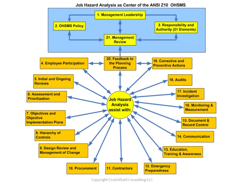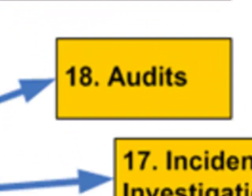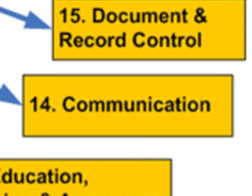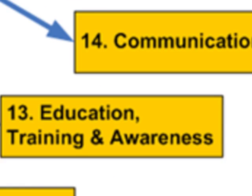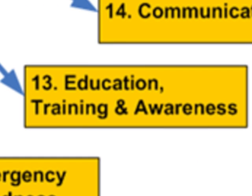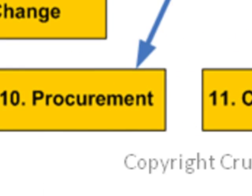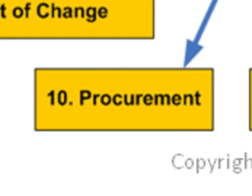A good job hazard analysis process aids in improving audits. It can aid in improving communications about the safety program, the risk and hazards, and their control. It supports improvement of training programs, emergency preparedness programs, and procurement of tools, equipment, and materials necessary to do the job safely.